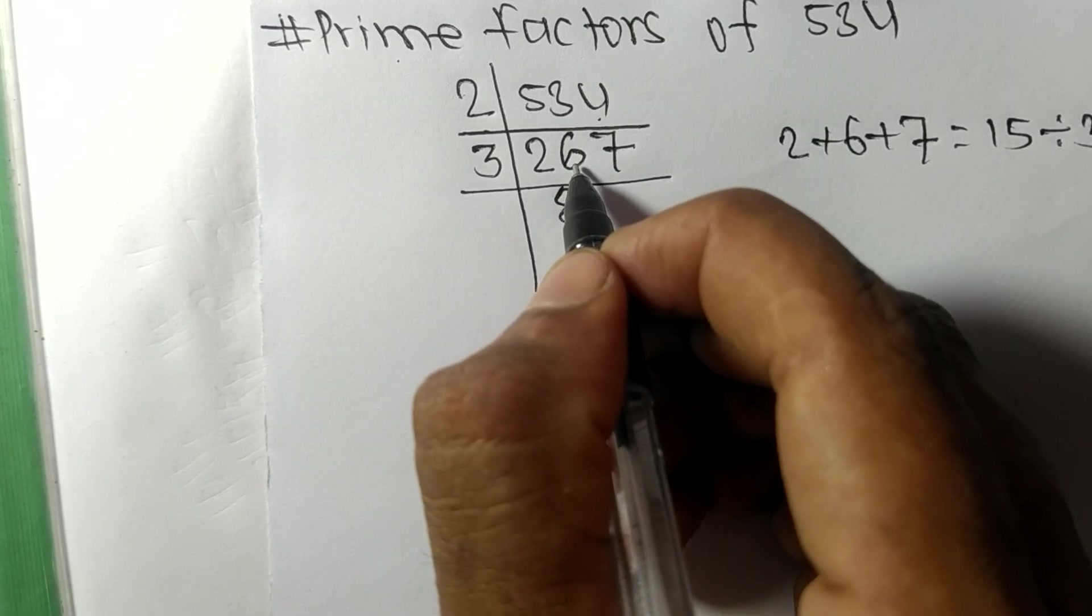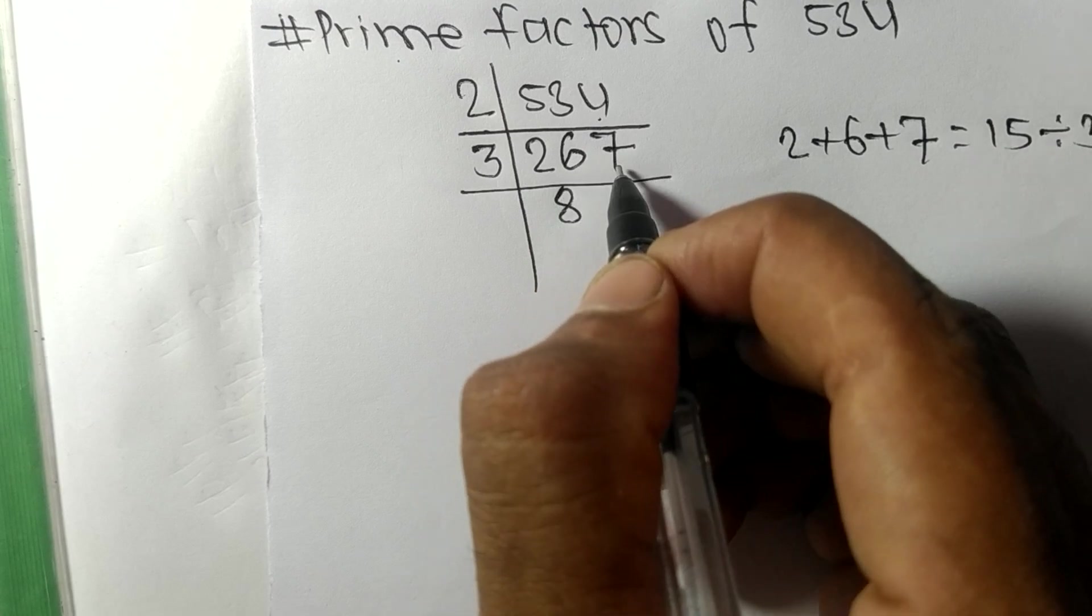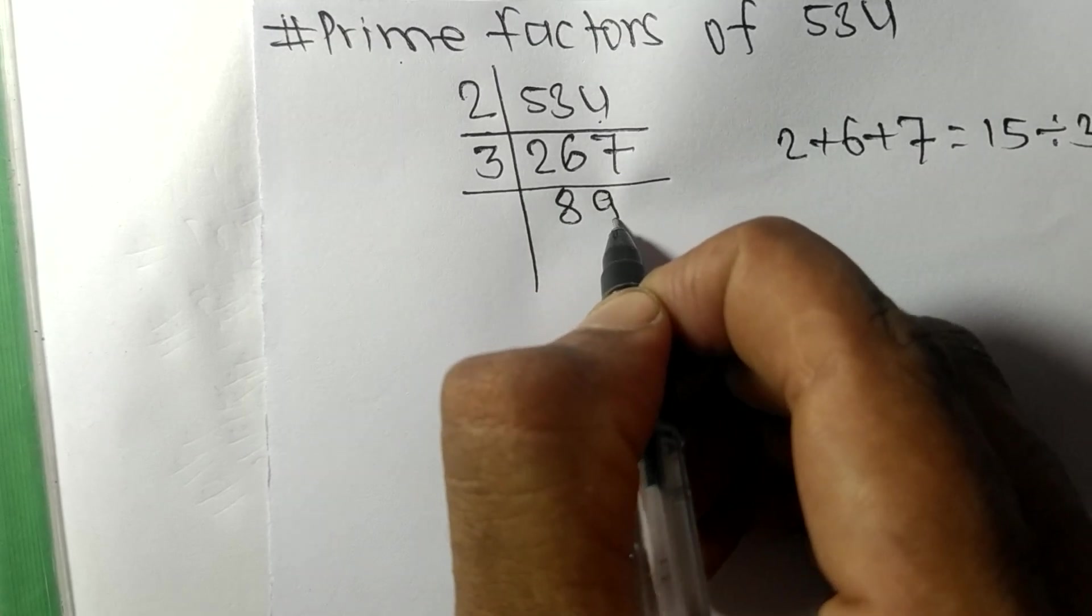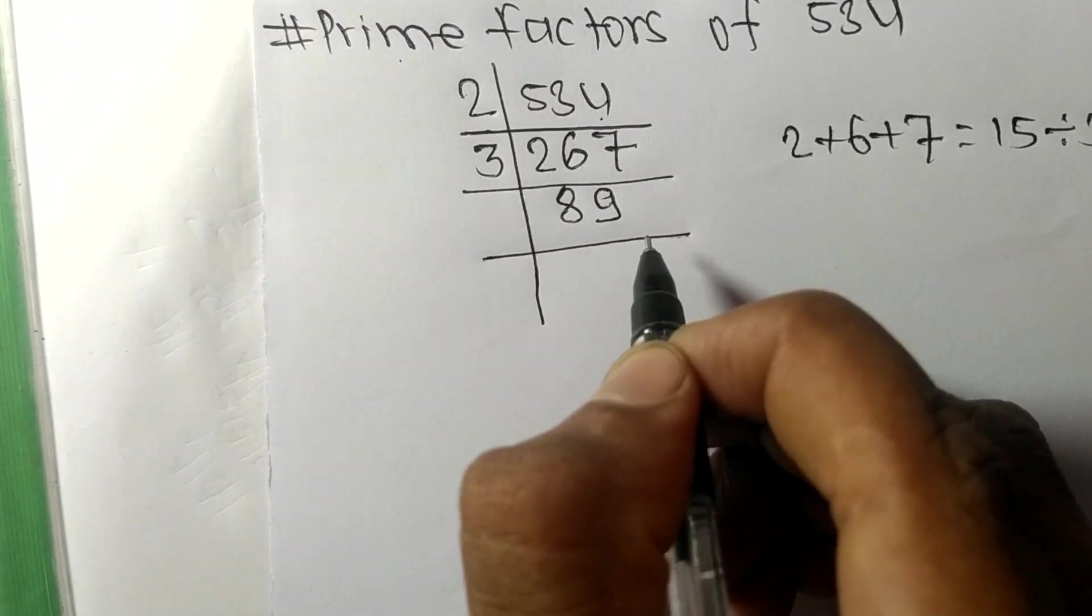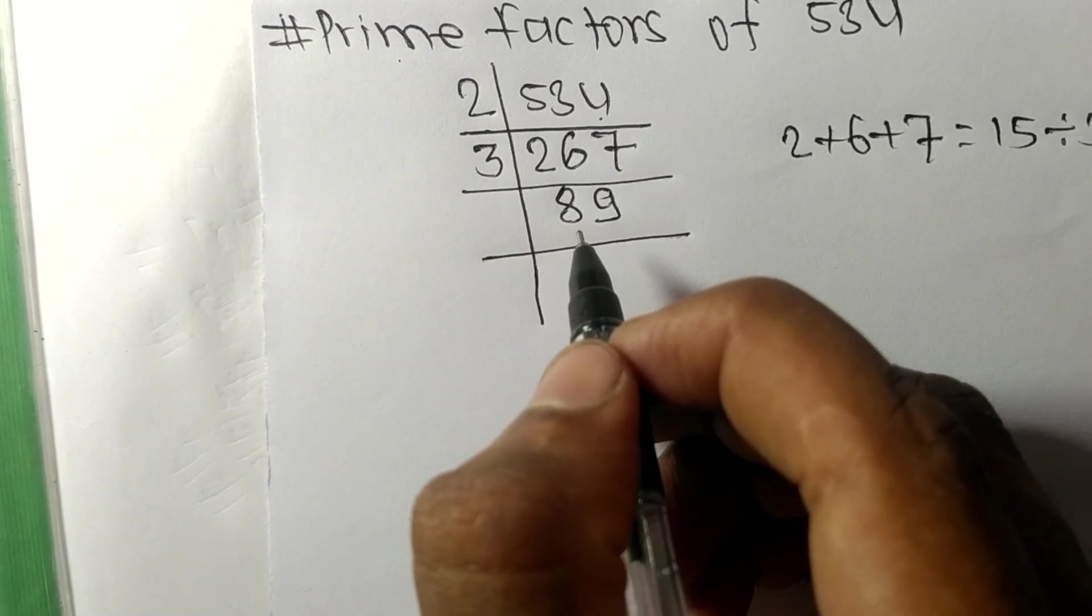89 is our prime number, so it is divisible by 89 itself, and we get 1.